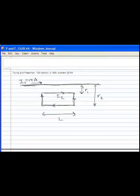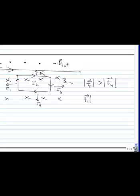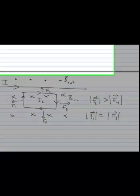So this wire loop will have a net force in the upward direction because F2 is greater than F4. And F1 and F3 have equal magnitudes. Because the magnetic field strength along wire F3, it's not constant, right?